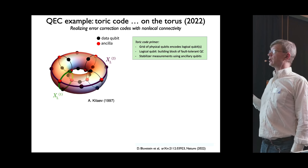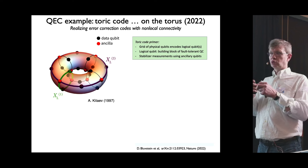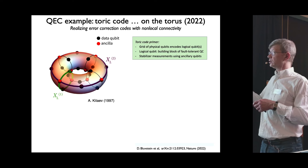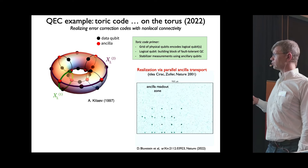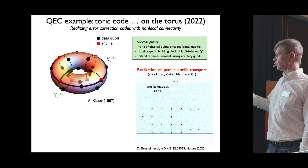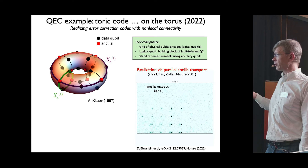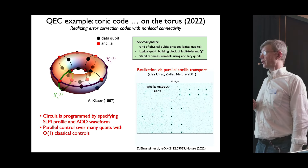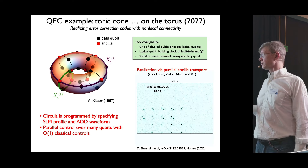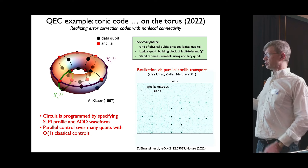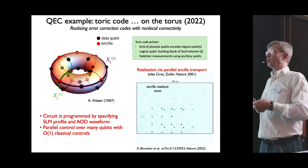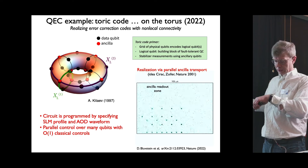We realized the toric code on the torus. Realizing a torus in two dimensions is hard, but with moving atoms it's not difficult. We have data atoms and ancilla atoms that measure parity checks — the ancilla atoms move, with one last move going all the way across the array to implement non-local parity checks. This circuit is programmed by specifying essentially just two voltages in the AOD, encoding two logical qubits corresponding to the two directions around the torus.